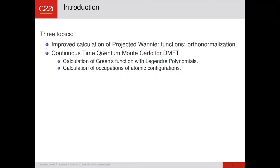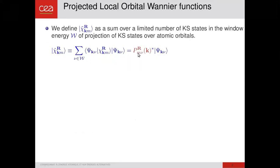First of all, I'm going to discuss Wannier functions, a small technical detail which has some importance in some cases. In the DFT plus DMFT implementation, we use as correlated orbitals, projected local orbital Wannier functions, which are rather similar to maximally localized Wannier functions, but much simpler to compute. To compute them, there are two steps. The first step is to compute chi tilde, which is this quantity here, which is a sum over a limited number of Kohn-Sham states in a given window of energy.